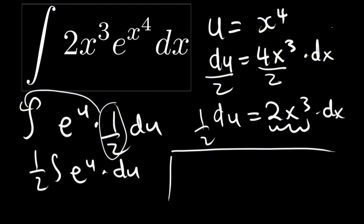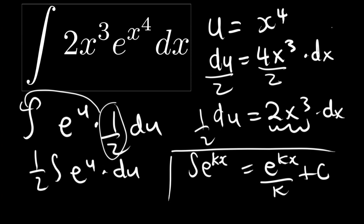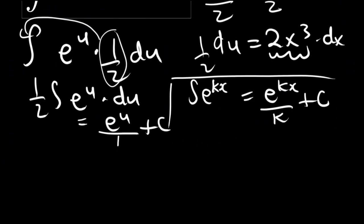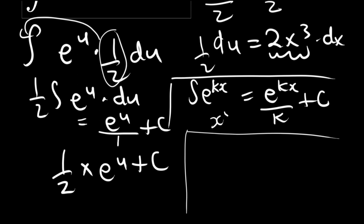The integration of e to the power u: the integral of e to the power kx is e to the power kx divided by k plus C. So the integral of e to the power u is e to the power u divided by one plus C, which is simply e to the power u plus C. Finally, substituting back u equals x to the power four, we get one-half times e to the power x to the power four plus C as our final answer.